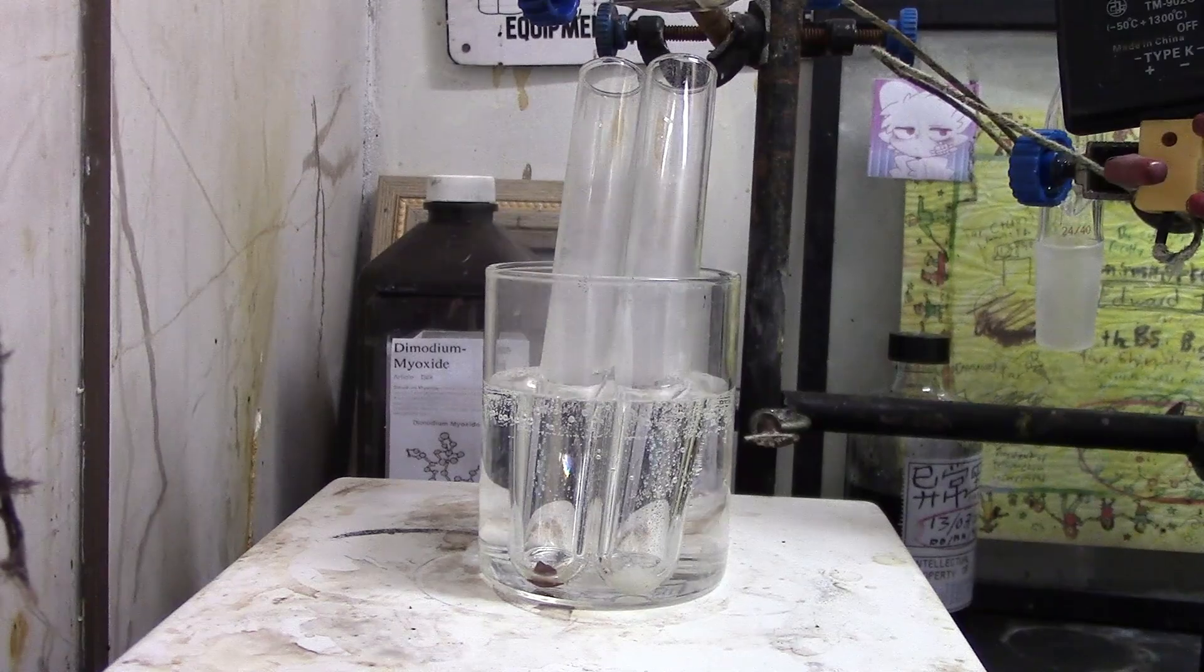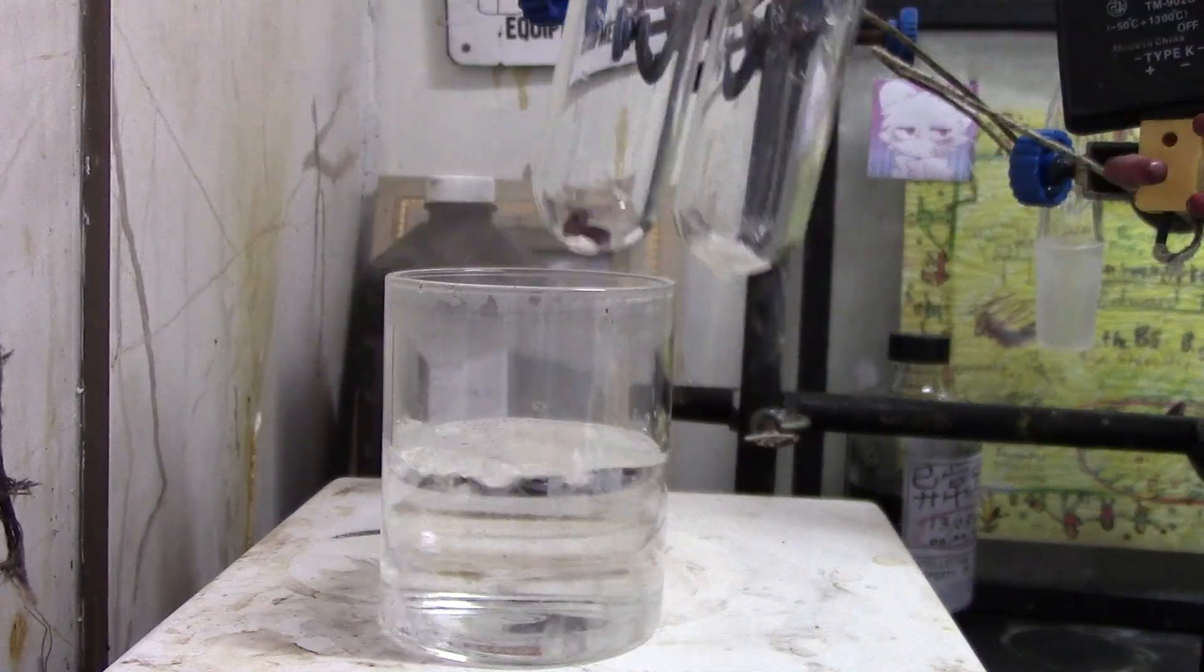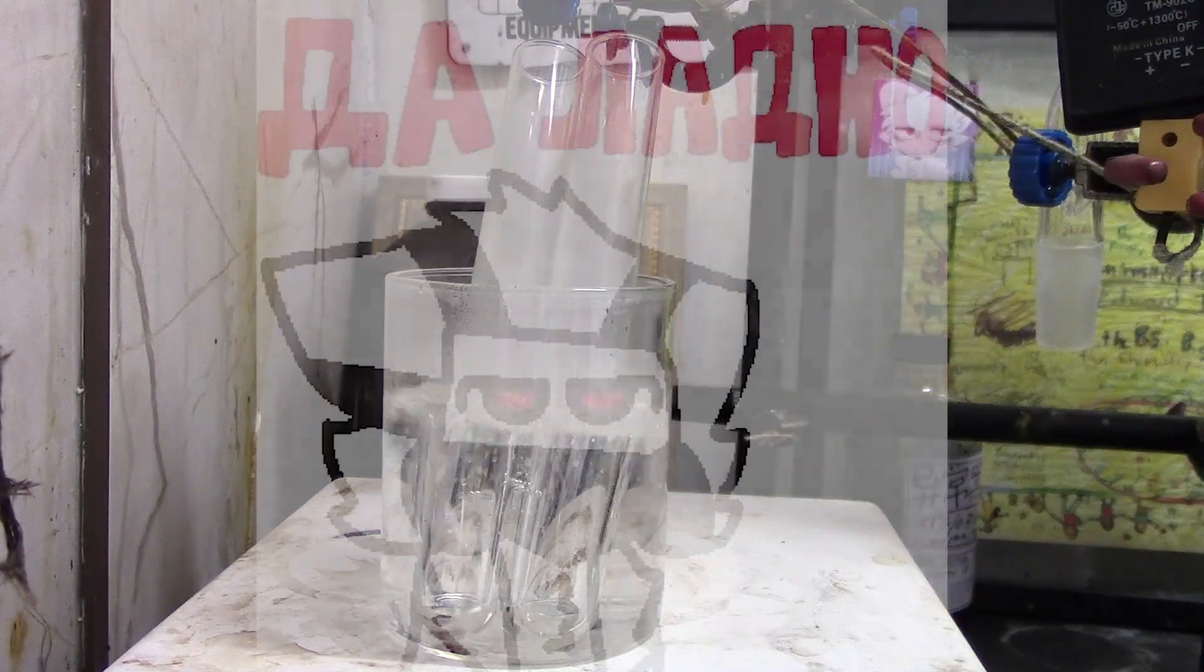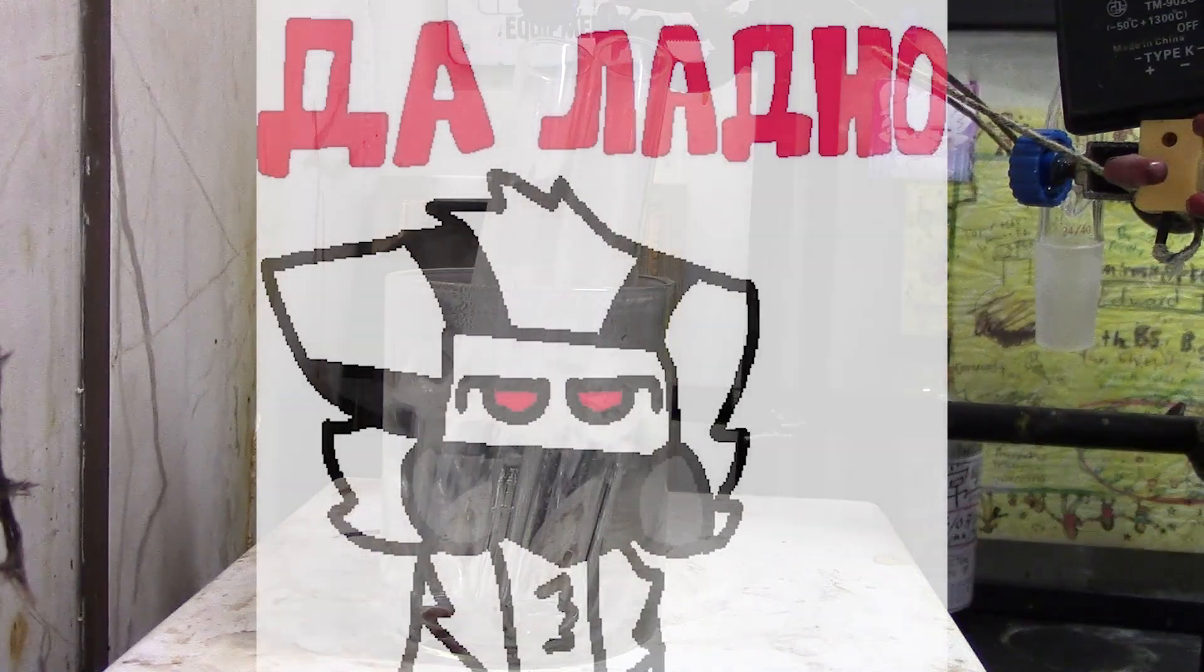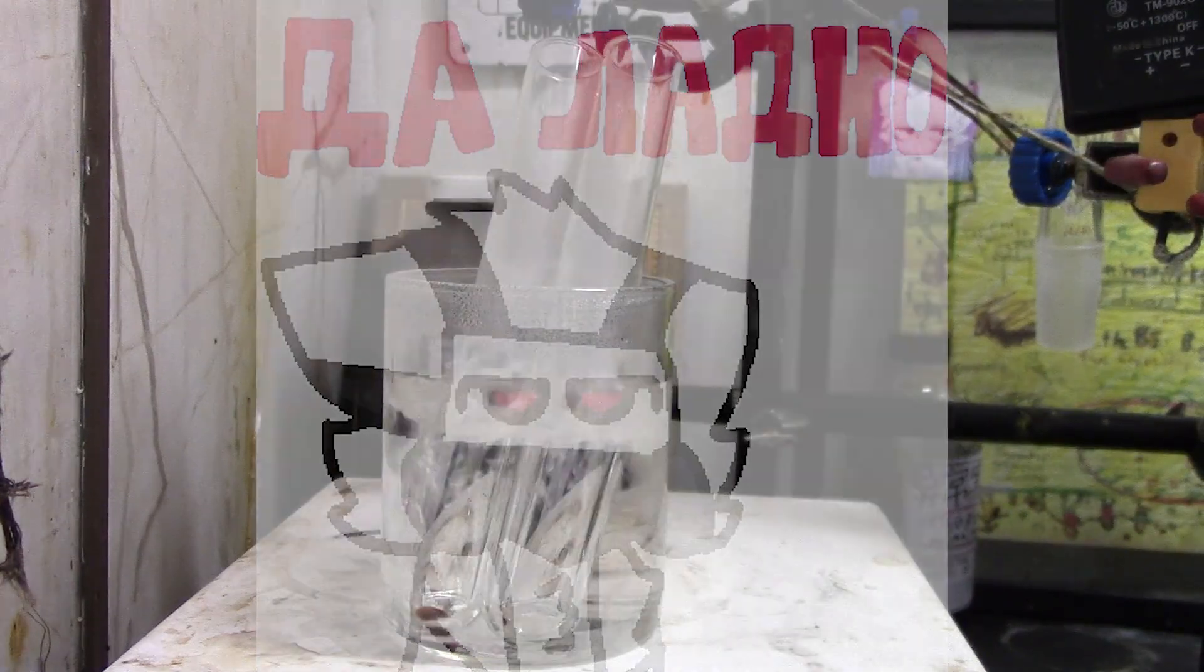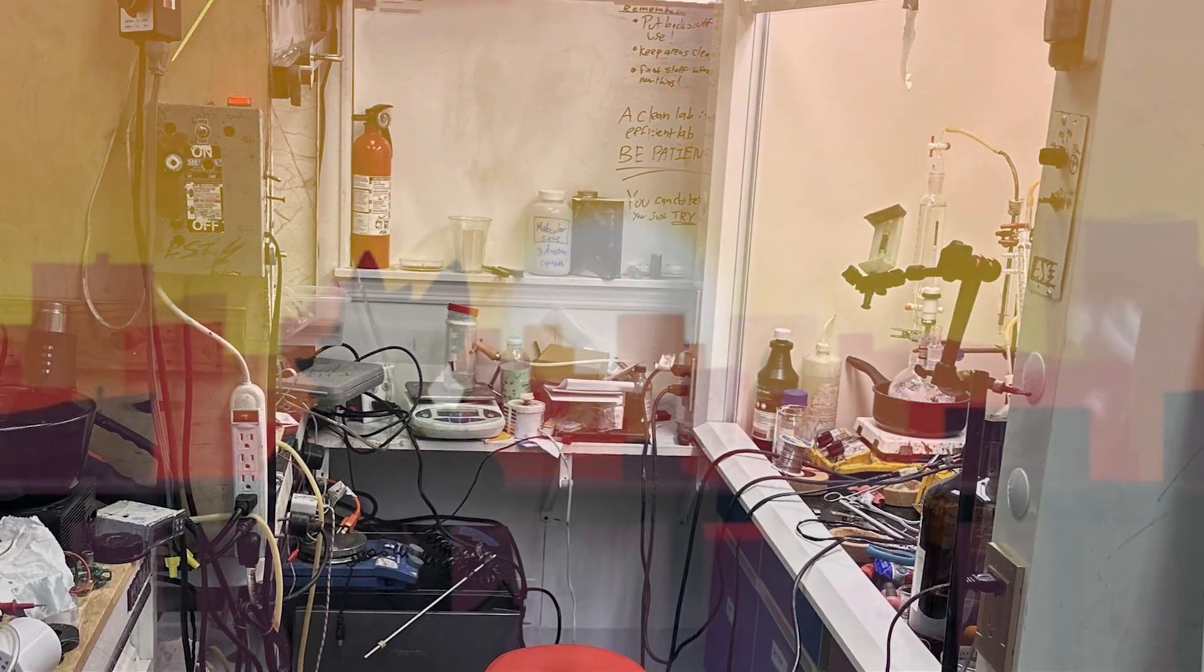So let's do a melting point test. We'll just boil it in water, because our product should not melt in hot water. And it melted in hot water. So we just have dirty vanillin.